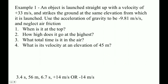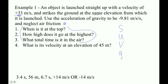Let's do an example problem. An object is launched straight up with a velocity of 33 meters per second and strikes the ground again at the same elevation, neglecting air friction. When is it at the top? How high does it go at the highest? And what is the total time in the air? I'm going to do these all together. We can do them with a single SUVAT because they involve the same interval. So let's go s, u, v, a, t. And what we're doing is going from the ground to the top.